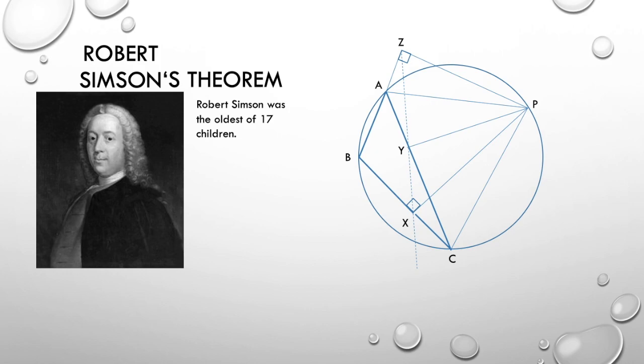So now, referring to quadrilateral BZPX, angle ABC plus angle ZPA plus angle XPA equals 180 degrees, since we know that the sum of the other two angles in quadrilateral, angles PZB and PXB, are 90 degrees. Using these two facts, we can conclude that angle CPX is equal to angle ZPA.